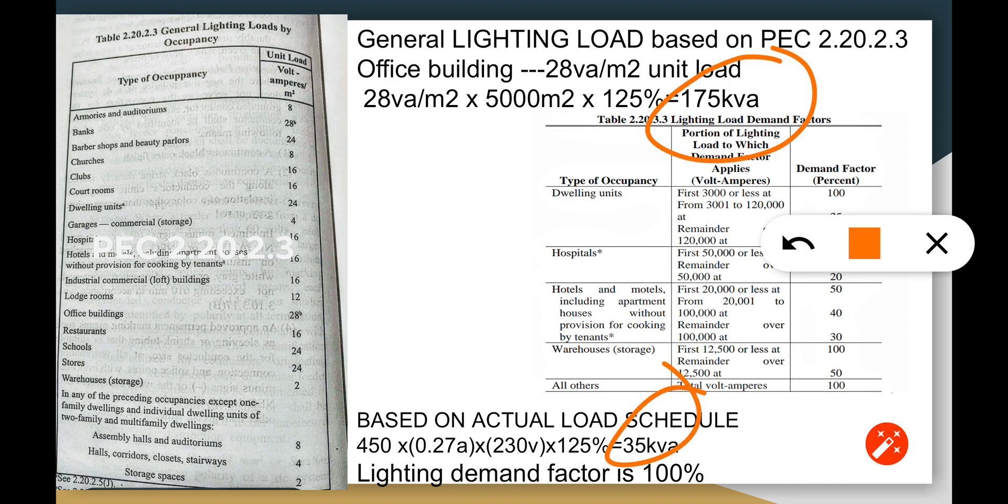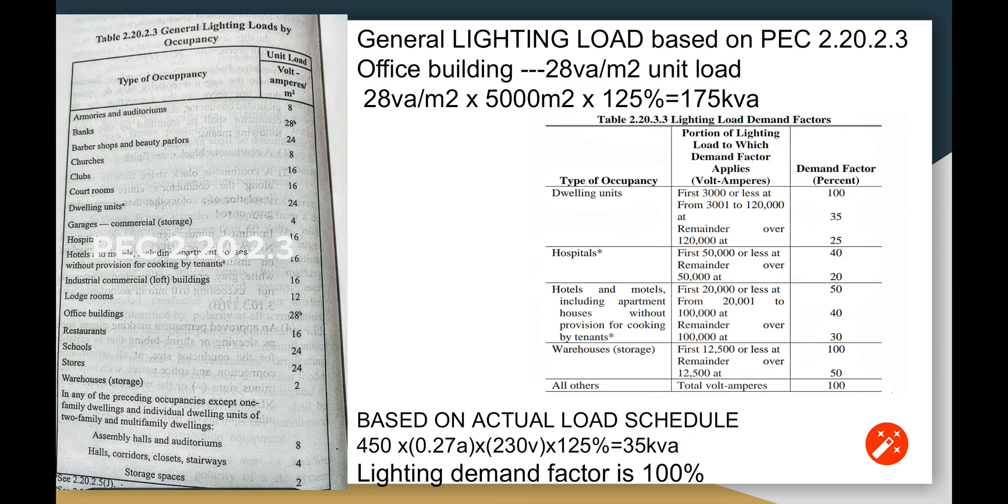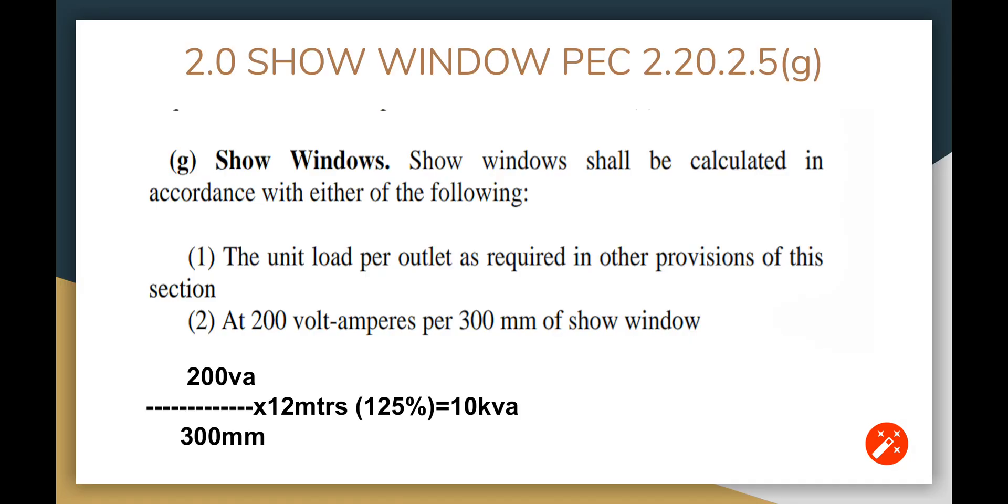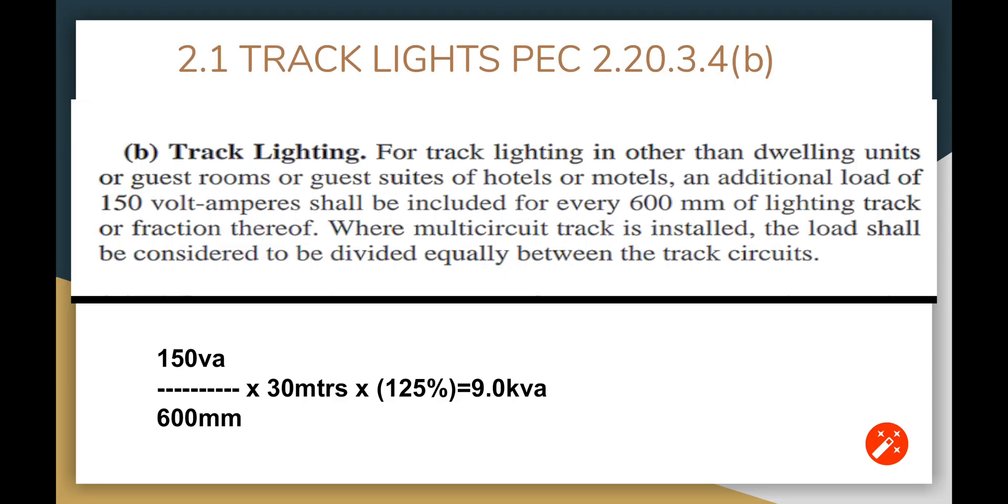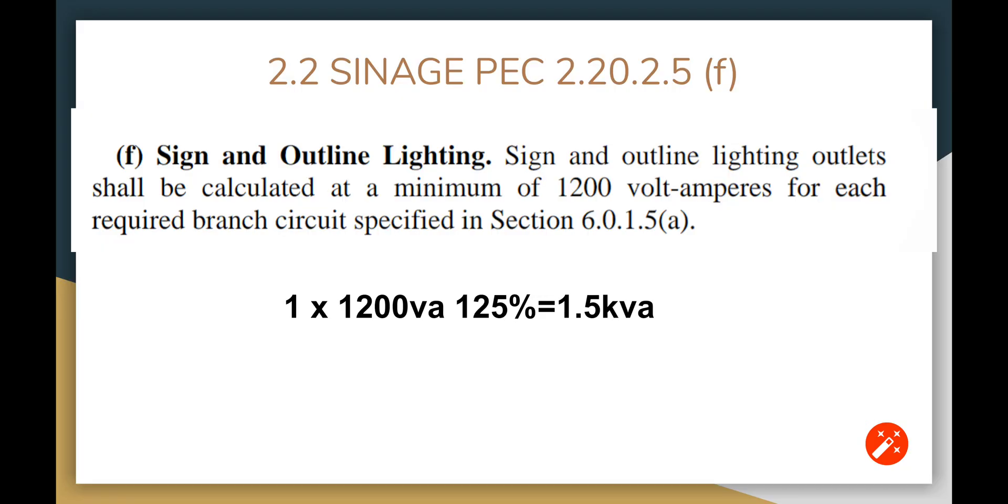But the largest one is 175 kVA, so we're going to use 175 kVA in our calculations. The show windows is easy, the track lights also is easy, and the signage is easy also to calculate and interpret from the PEC.